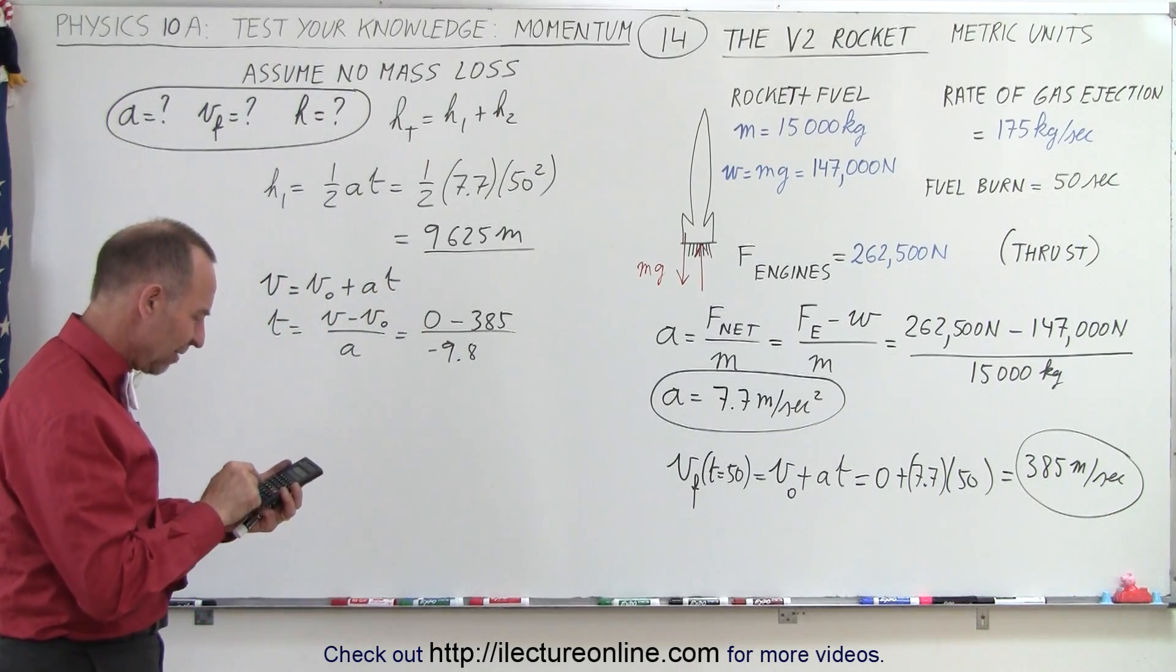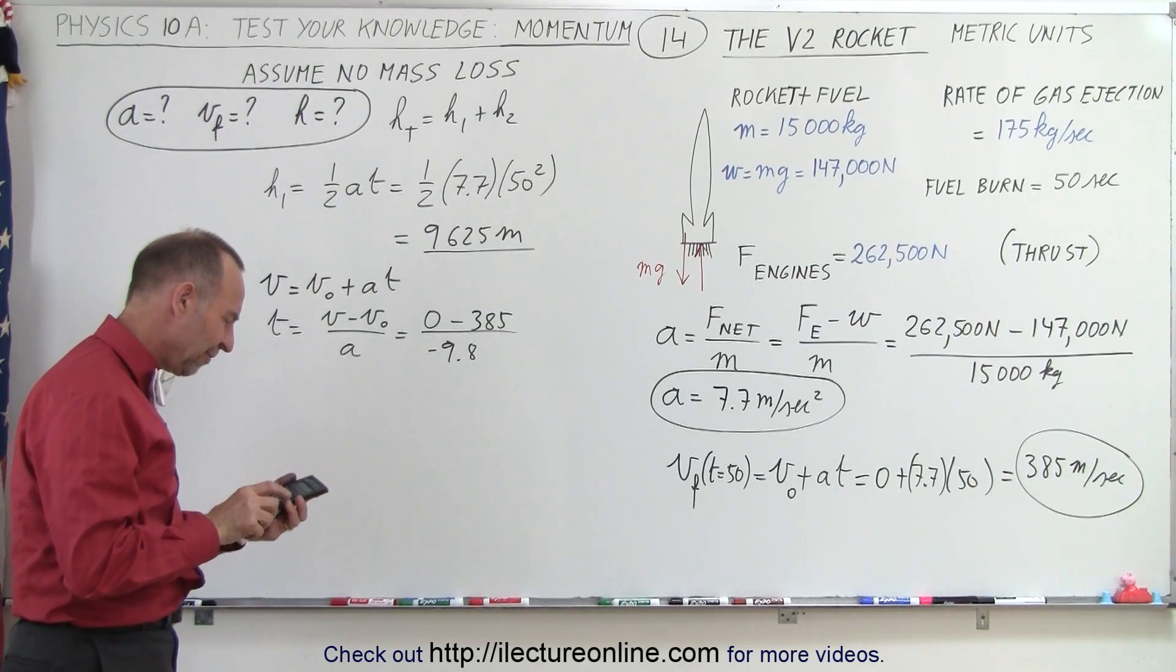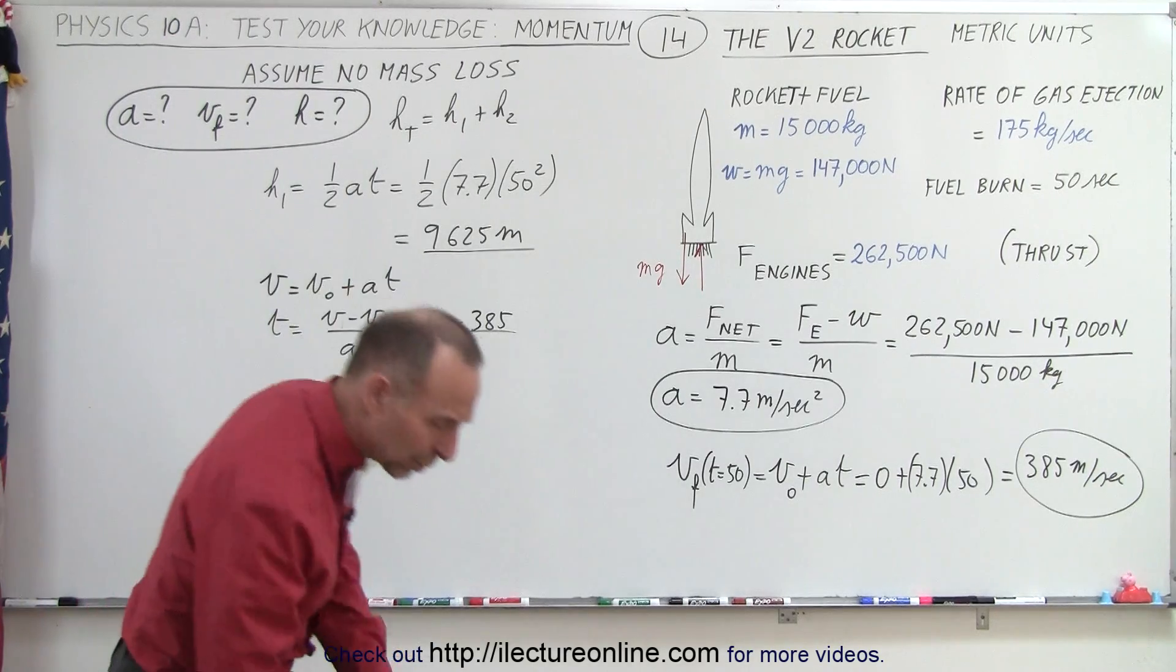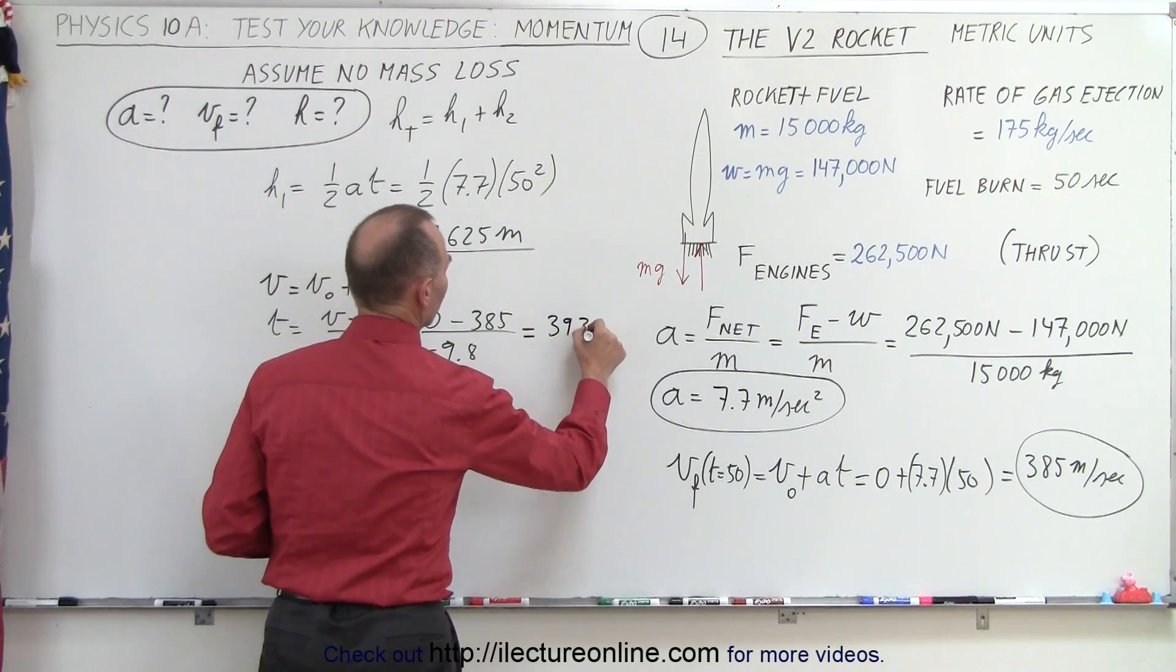So 385 divided by 9.8 equals another 39.3 seconds.